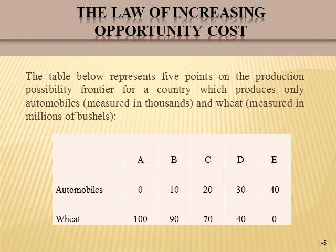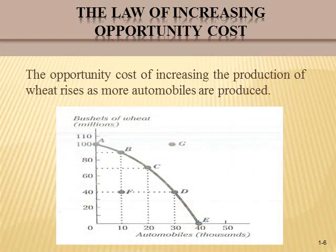Now we are moving to sketch the PPF. We take automobiles on the x-axis and bushels of wheat on the y-axis. For automobiles we mark 0, 10, 20, 30, 40, 50, and for wheat we mark 20, 40, 60, 80, 100. Then we plot the points A, B, C, D, E: (0, 100), (10, 90), (20, 70), (30, 40), (40, 0), and after plotting the points we sketch the PPF curve.